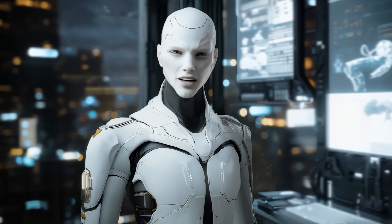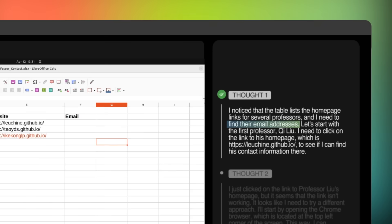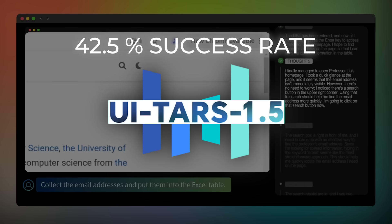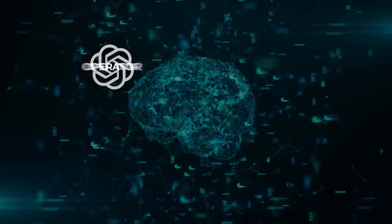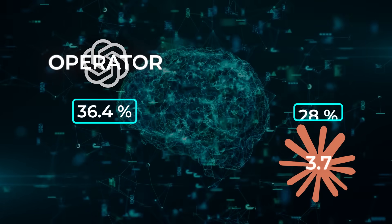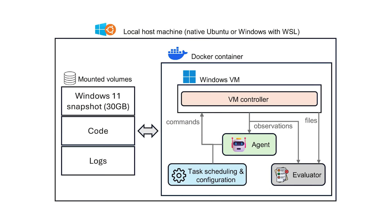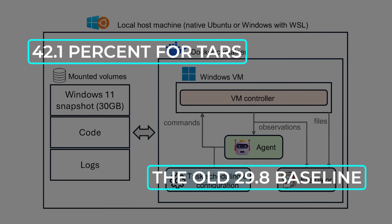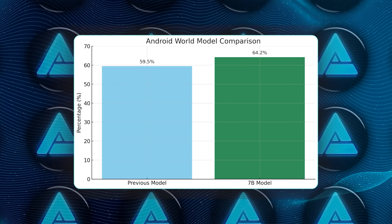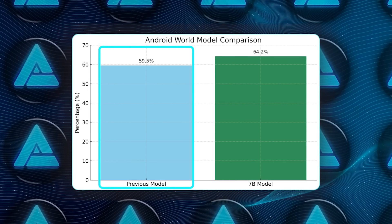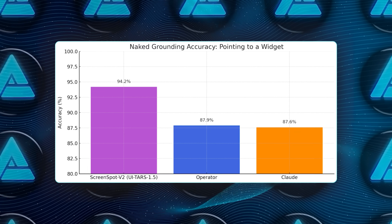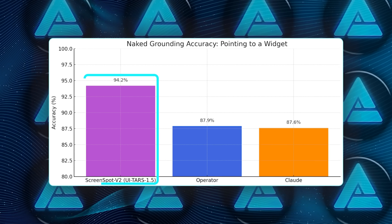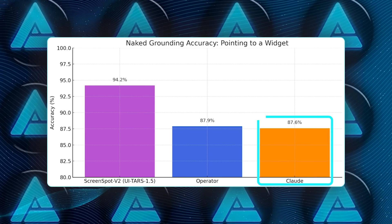Now the numbers — because everybody asks for the scoreboard. In the synthetic desktop sandbox OS World, UITARS 1.5 nails a 42.5% success rate with just 100 steps, beating OpenAI's Operator at 36.4% and Claude 3.7 at 28%. Windows Agent Arena, a tougher 50-step Windows challenge, shows 42.1% for UITARS versus the old 29.8% baseline. On Android World, the 7B model pulls 64.2%, topping the previous 59.5%. For naked grounding — pointing to a widget — ScreenSpot V2 clocks UITARS 1.5 at 94.2% accuracy, Operator at 87.9%, Claude at 87.6%.